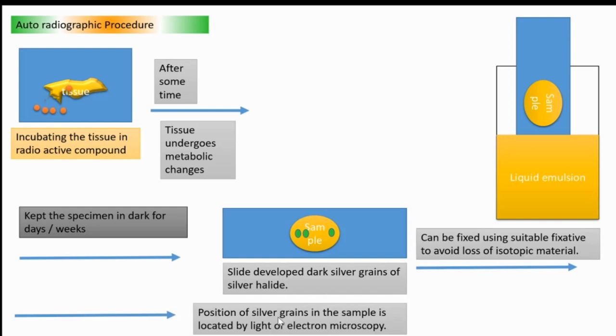And it is fixed using fixative for avoiding loss of any isotopic material from that slide. And then the position of the silver grains in that sample is located by light or electrode microscopy. So by understanding, then we can know what are the path of that incorporated radioactive isotope inside that tissue. In that way, we can understand what is the fate, what is the metabolic pathway it underwent.